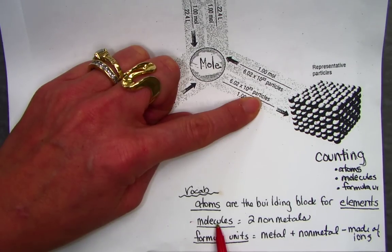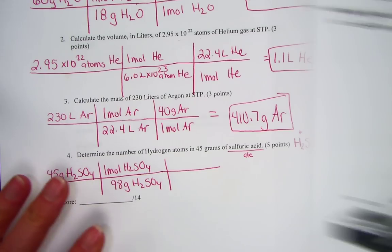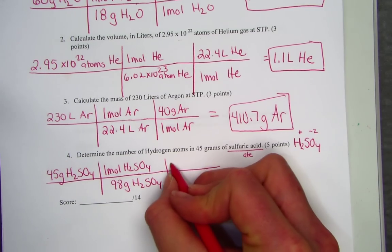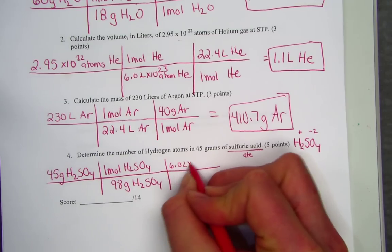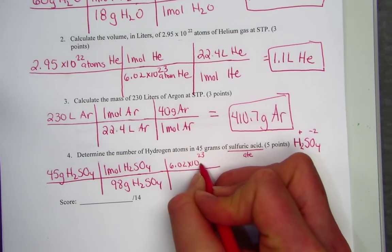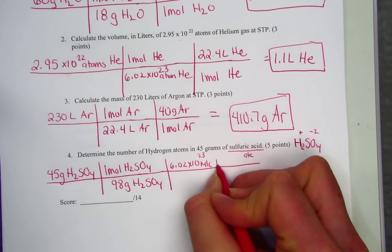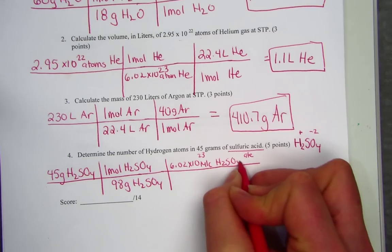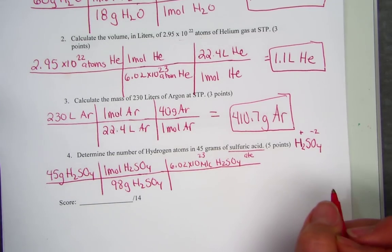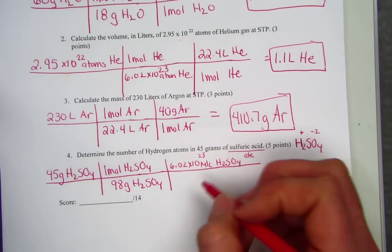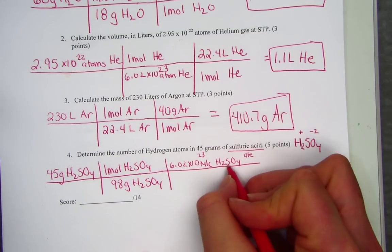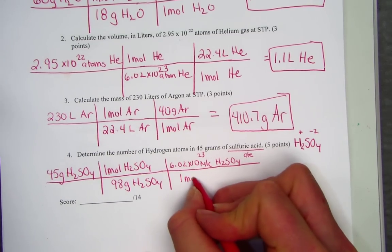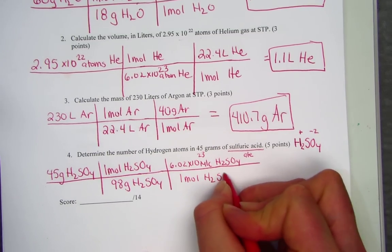H, S, and O are all nonmetals. So when I use Avogadro's number, 6.02 times 10 to the 23rd, I must put the word molecule to correctly label the type of compound sulfuric acid is. There's an Avogadro's number of molecules in one mole of sulfuric acid.